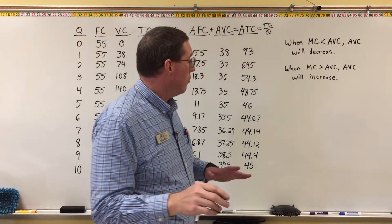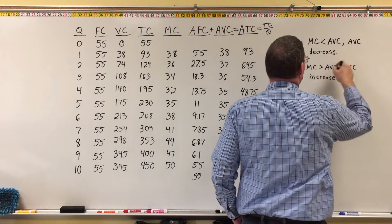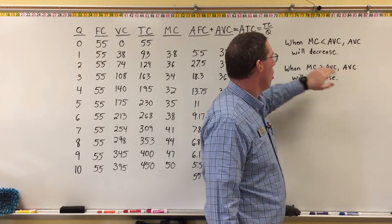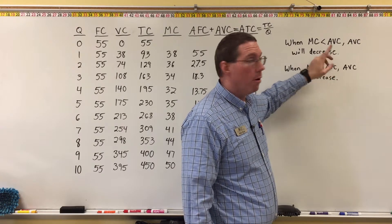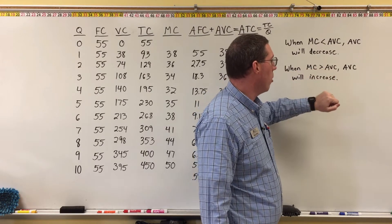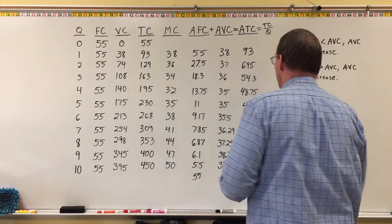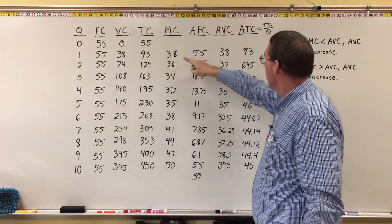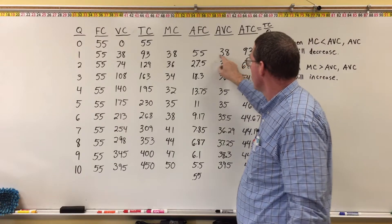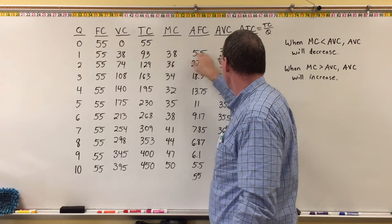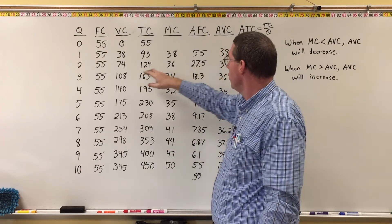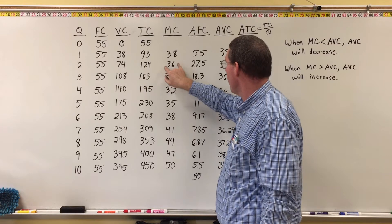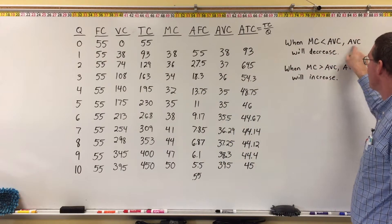The major concept to write down is that as quantity increases, average variable cost gets closer to average total cost — the curves get closer and closer together as quantity increases because average fixed cost is getting closer to zero. Now, when marginal cost is less than average variable cost, average variable cost will decrease. But when marginal cost is larger than average variable cost, average variable cost will increase.